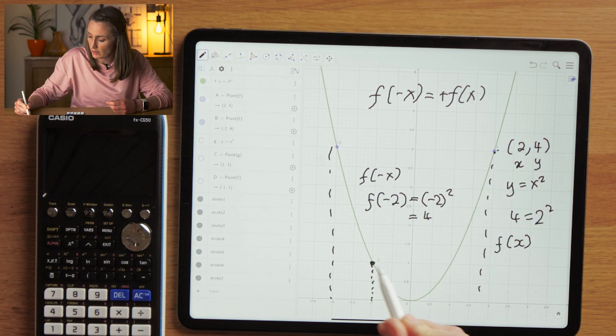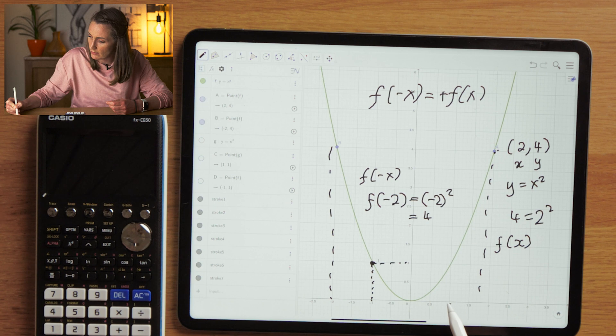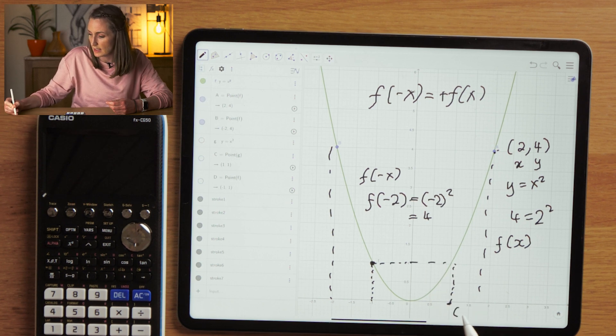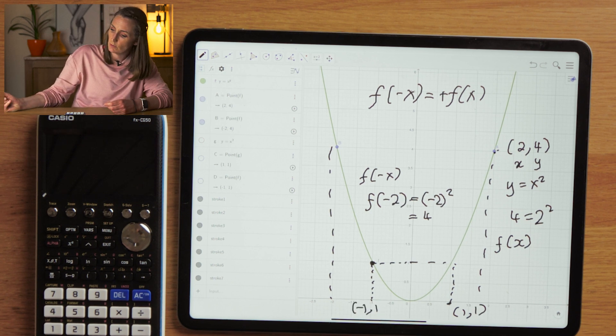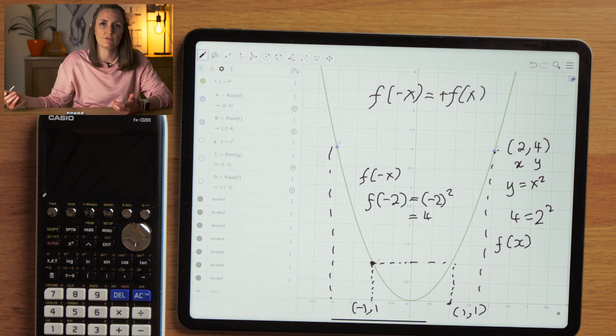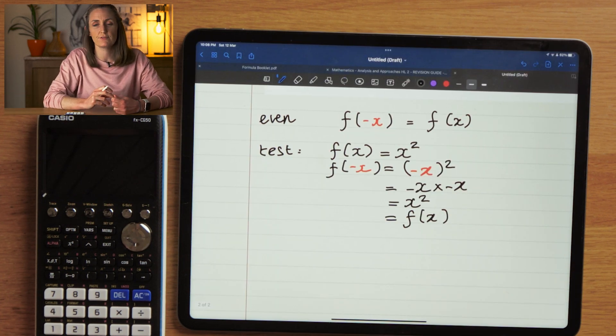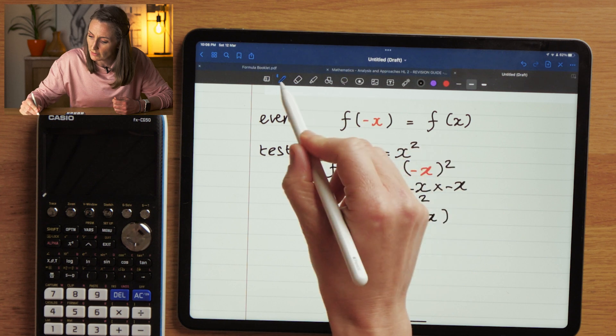So we can see that f of minus x is always equal to the same as f of x. I can take another point here and check it. Let's have a look at minus 1 and 1. So I can see here that f of 1 is equal to 1, but f of minus 1 is also equal to 1. So that's an even function.